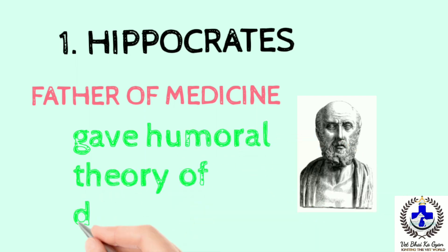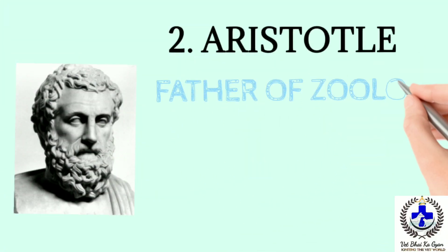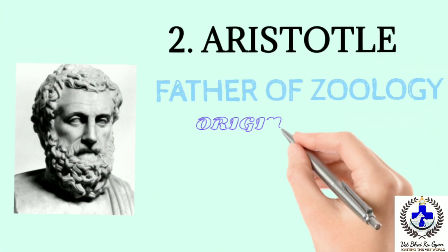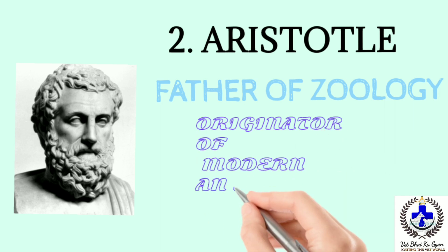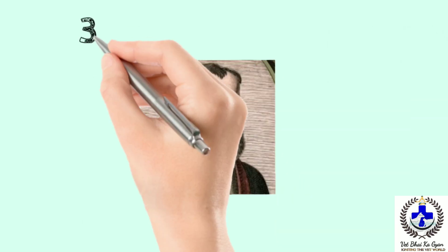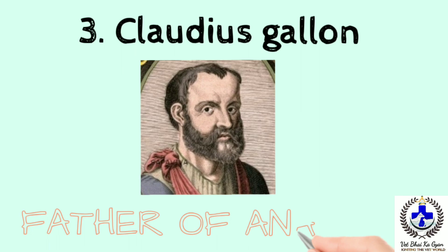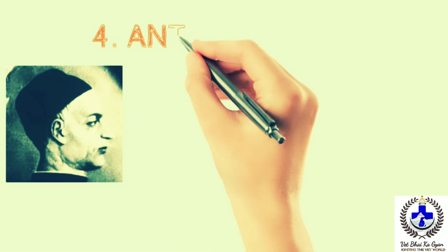Next we go to scientist Aristotle. He is the father of zoology and originator of modern anatomy and physiology. Next we go to Claudius Galen. He is the father of anatomy.